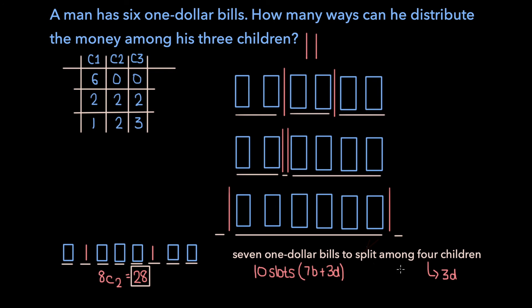And so the number of ways the money can be split up between the four children is the number of ways that three dividers can be placed in the ten slots. So for this variation, there are ten choose three, which is 120, ways that the money can be split up among the four children.